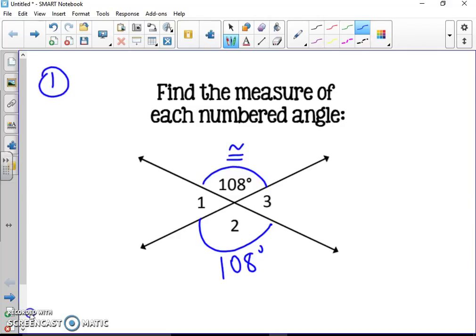Next thing we're looking for is either angle 1 or angle 3. These are also congruent to one another because they're vertical. However, angle 1 and 108° are not congruent, but they do make a linear pair.